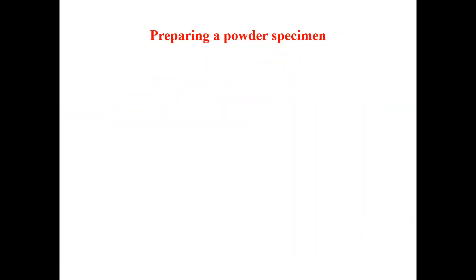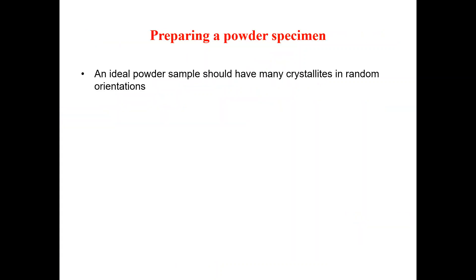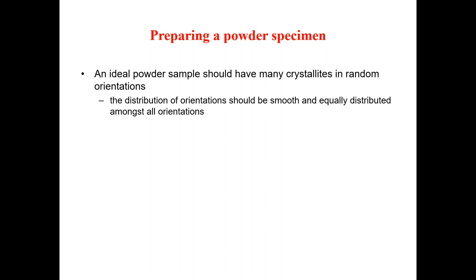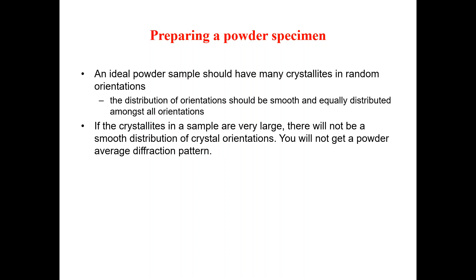Today's lecture is on preparing powder specimens. An ideal powder sample should have many crystallites in random orientations. The distribution of orientations should be smooth and equally distributed amongst all orientations. If the crystallites in a sample are very large, there will not be a smooth distribution of crystal orientations and you will not get a good powder diffraction pattern.